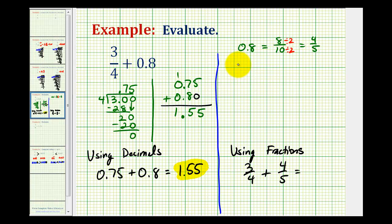To determine the sum in fraction form, we know we have to have a common denominator. So if our denominators are four and five, the least common denominator would be twenty. So we have to multiply three-fourths by five over five, and we have to multiply four-fifths by four over four.